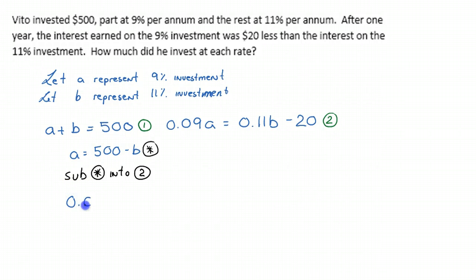So that means we have 0.09 and A is 500 minus B. Perfect. 0.11B minus 20.